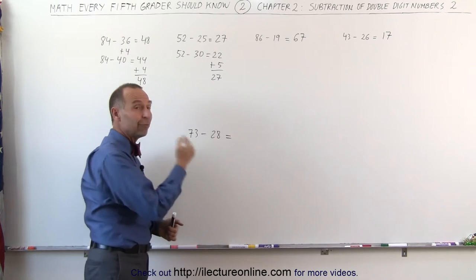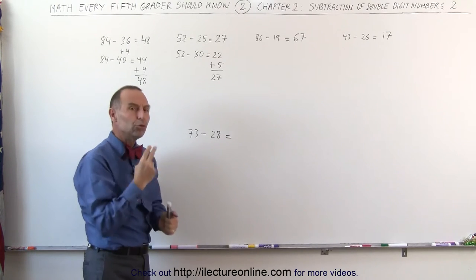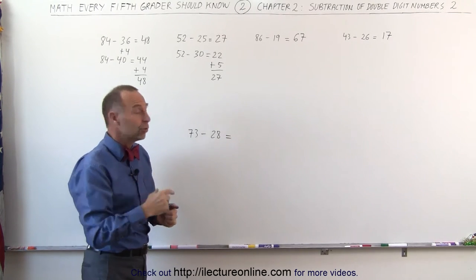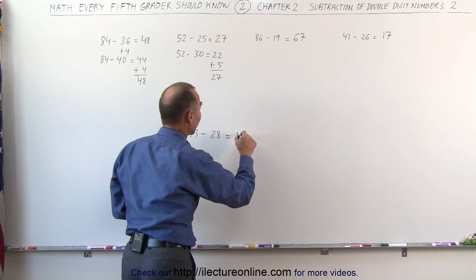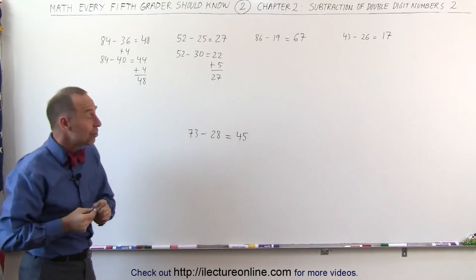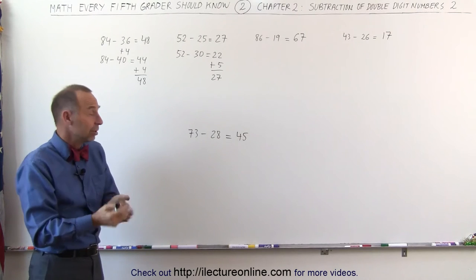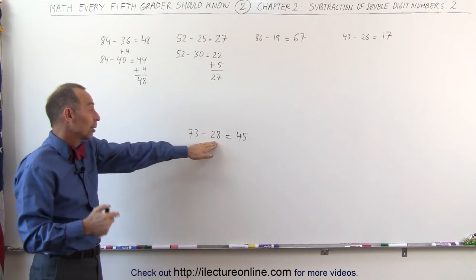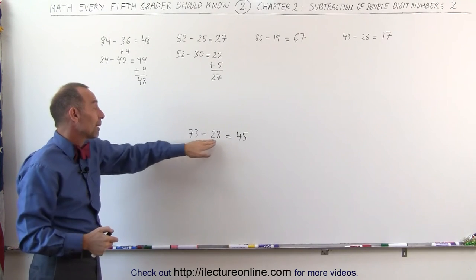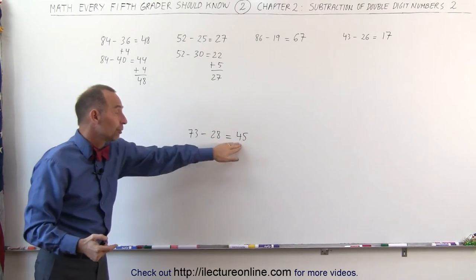but I subtracted two more than I should. 43 plus 2 gives me 45, and that's the answer. You can very quickly in your head come up with a subtraction. All you have to do is add a couple more to that. So 73 minus 30, 43 plus 2, 45.